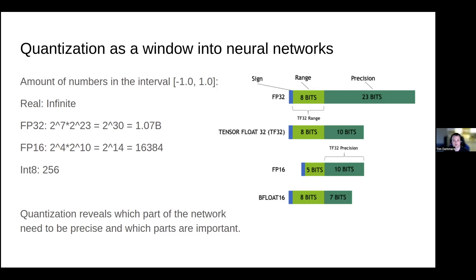To give an overview of what quantization looks like: if we have real numbers between minus one and one, there are an infinite number of those, but we don't have infinite memory in computers. So we need to limit ourselves to a certain number of bits. With 32 bits we have around 1 billion numbers in that interval; in 16 bits, only 16,000; and in int8, only 256. In this work, we do int8 quantization, which is quite extreme — we introduce a lot of small errors.